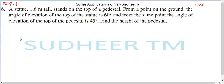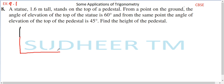A 1.6 meter tall statue is on the pedestal. I am drawing a pedestal here and marking the statue on top with black color. The statue is on the top of the pedestal, and from a distance from the foot of the pedestal we are given the angles of elevation.